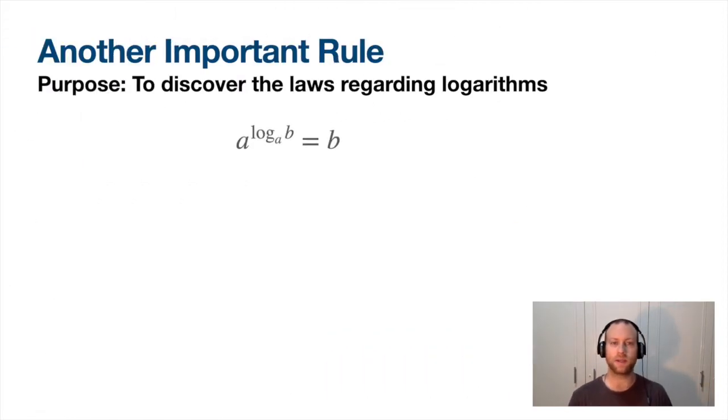So another important rule with this: if I have a to the power of log base a of b, again, these are inverses. A to the power of and log to the base of a are inverses, so they cancel each other out and give you b. So for something like this, if I've got 2 to the power of log base 2 of 32, the 2 and the log base 2 cancel because 2 to the power of that cancels out. So this just equals 32.